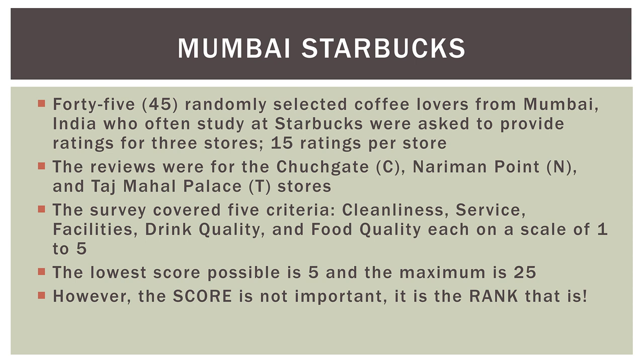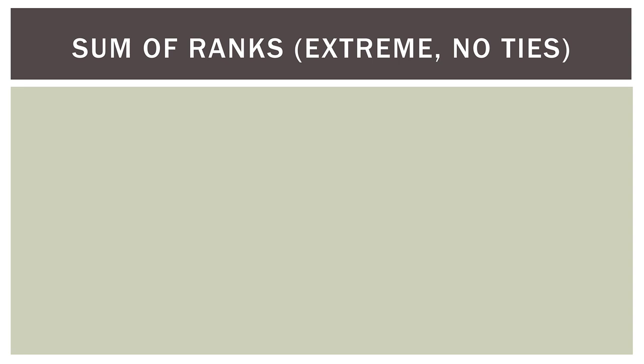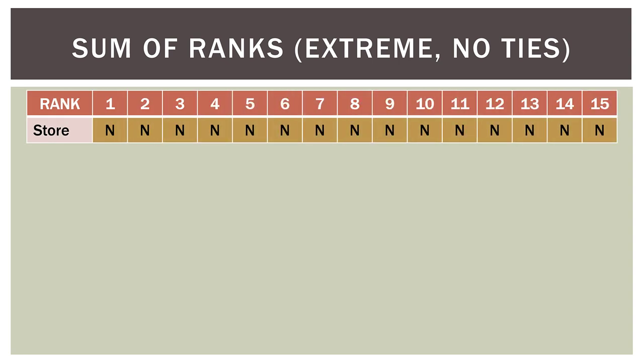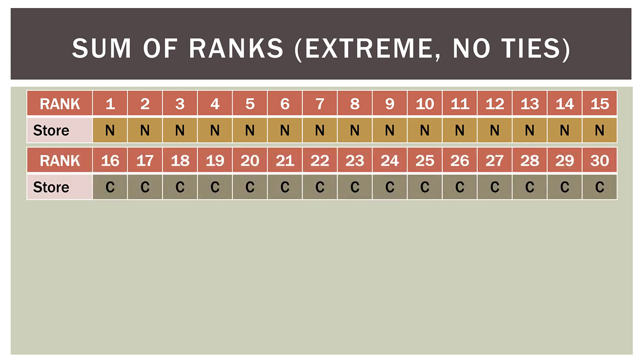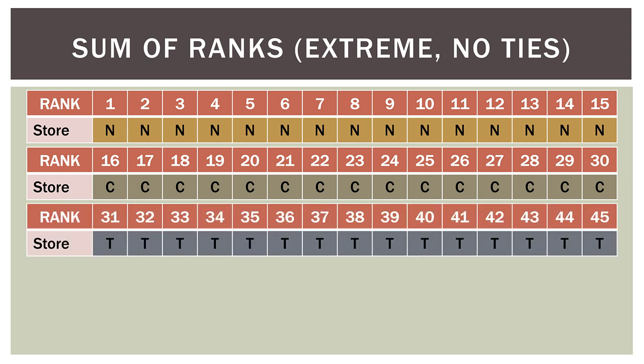So first, let's look at a couple of extreme cases. In this first extreme case, when we put all observations in a rank, the Nariman Point store had the first 15 ranks all to itself, the Churchgate store had all the middle ranks, and the Taj Mahal Palace store had the final set of ranks. So Nariman Point was ranks 1 through 15, Churchgate 16 through 30, and Taj Mahal Palace 31 through 45 — no ties and no overlapping.